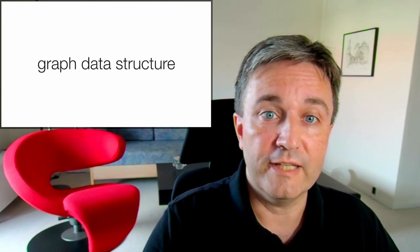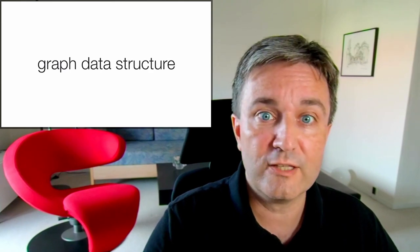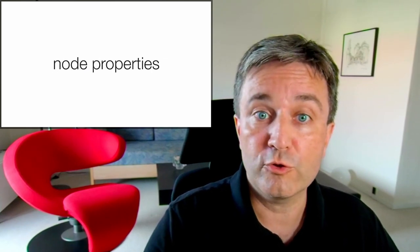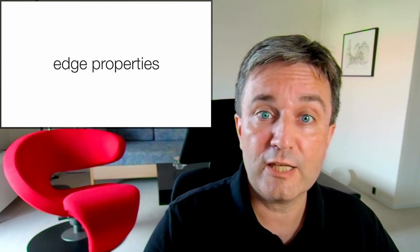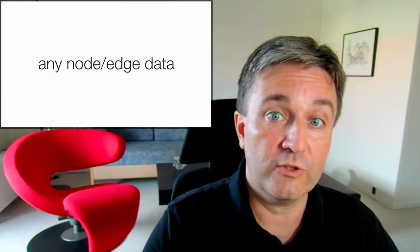The advantage of this is that the database inherently has graph structure, that is, it has nodes and edges, and associated with those, you have node properties and edge properties, which you can use to store any other data about these nodes and edges. This includes provenance information, that is, where you got them from and where people can find more information.